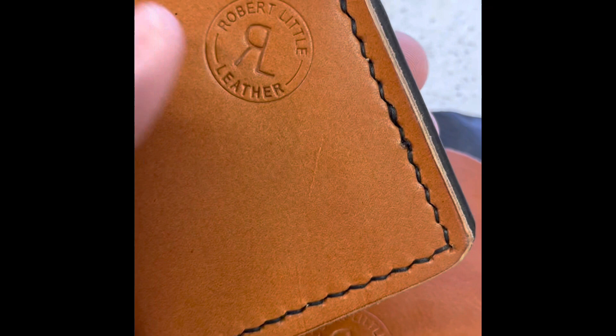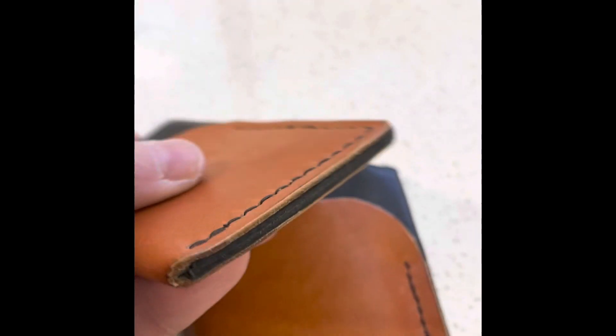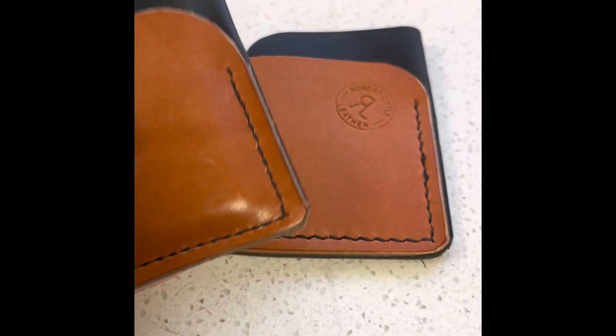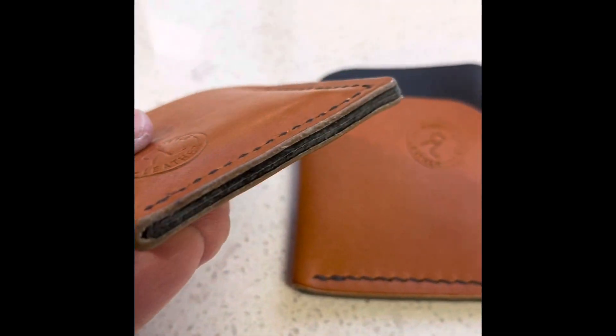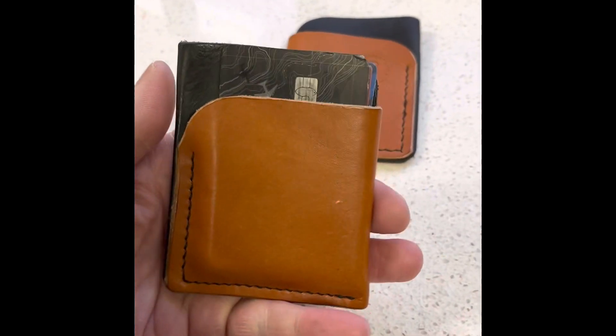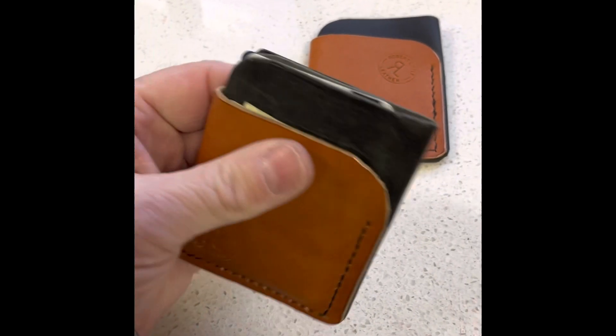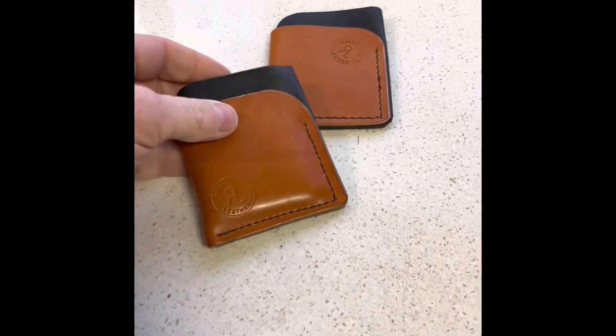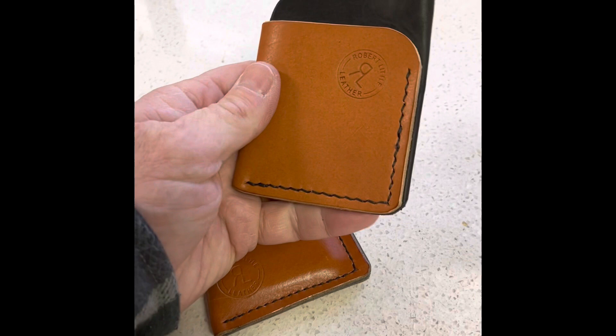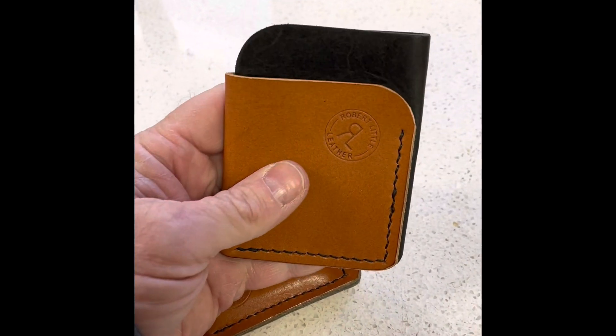Here we are with the finished minimal wallet. I have the edges burnished, and you can see I've carried this one just for a couple weeks and it's already starting to get its own patina. It's broken in quite well. If you want less stuff in it, it obviously would be thinner. I've got eight cards and five bills in the wallet as it sits. Hope you enjoyed and go ahead and make the project yourself. You'll enjoy it.